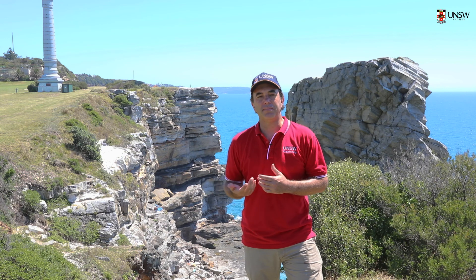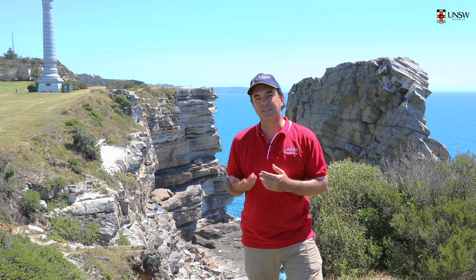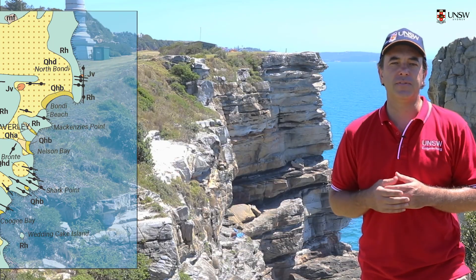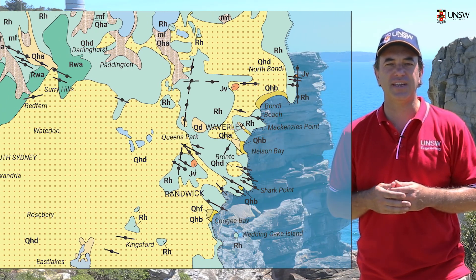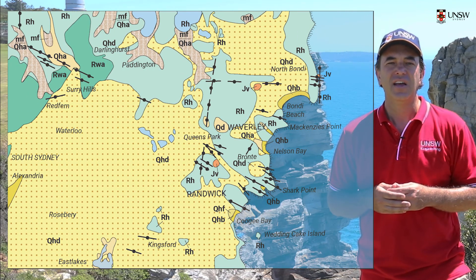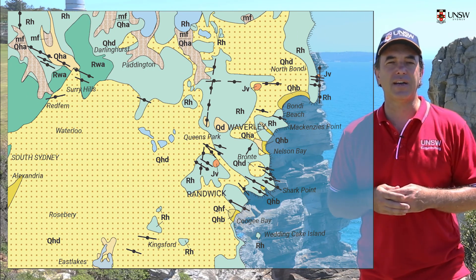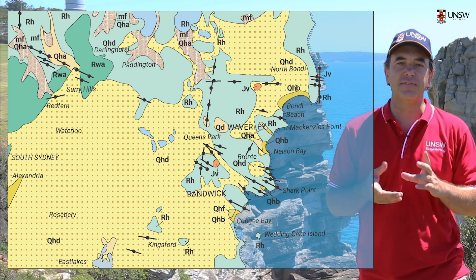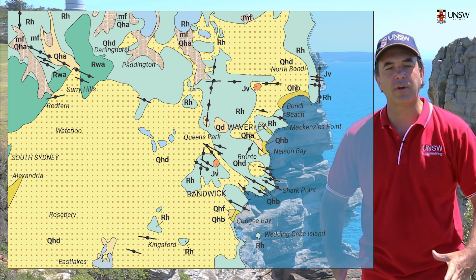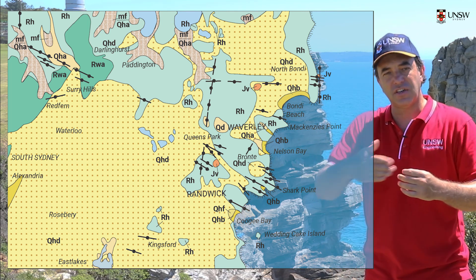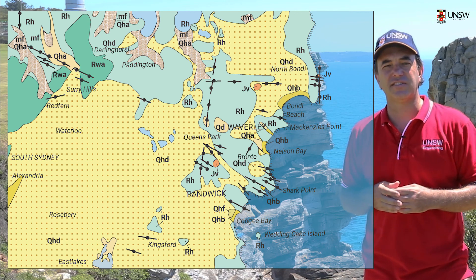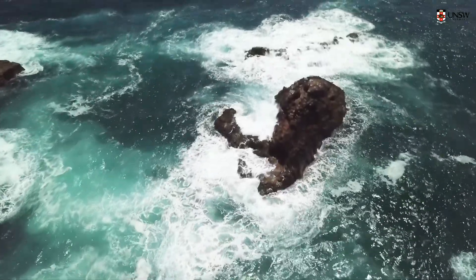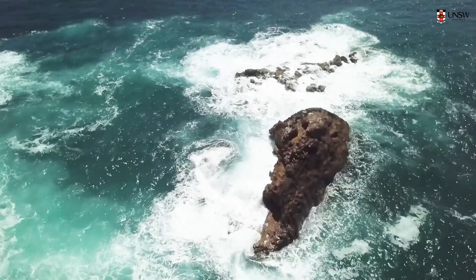The geology map that we looked at showed two main rock types. The first was the RH Hawkesbury sandstone that we viewed at a number of locations, and the other one is the JV, or the volcanic neck and the associated dikes. The volcanic neck is typically a basalt.